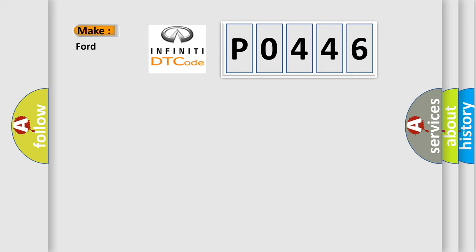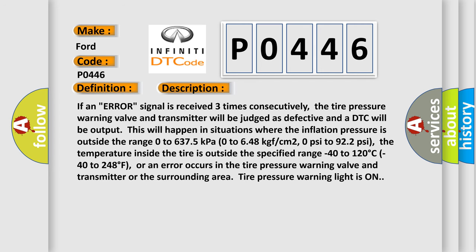So, what does the diagnostic trouble code P0446 interpret specifically? The basic definition is transmitter ID 1 error. If an error signal is received three times consecutively, the tire pressure warning valve and transmitter will be judged as defective and a DTC will be output. This occurs when the inflation pressure is outside the range of 0 to 6,375 kilopascals (0 to 648 kgf/cm²; 0 to 922 psi), or the temperature inside the tire is outside the range of minus 40 to 120 degrees Celsius (minus 40 to 248 degrees Fahrenheit), or an error occurs in the tire pressure warning valve and transmitter. The tire pressure warning light will be on.